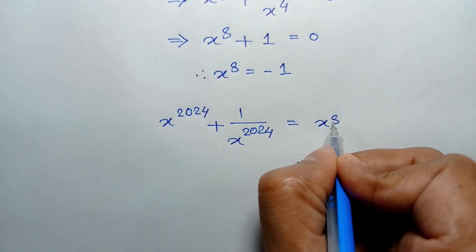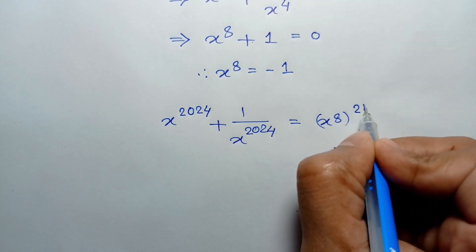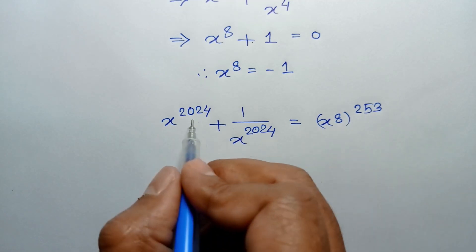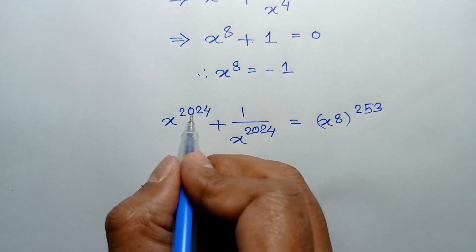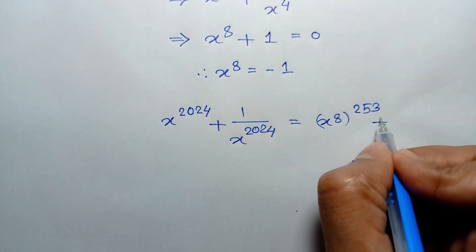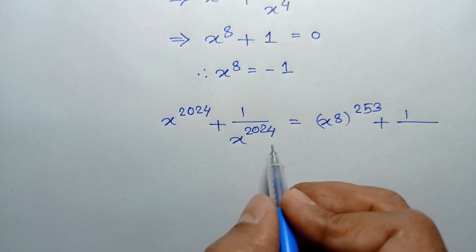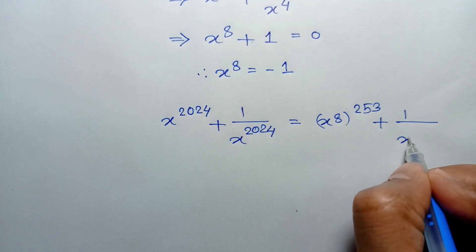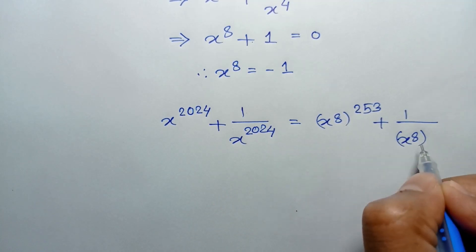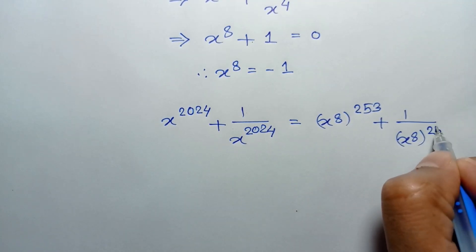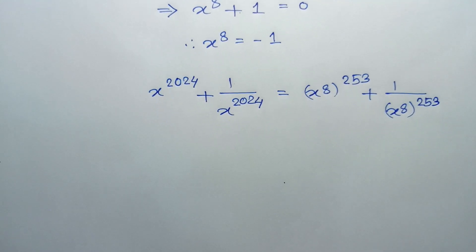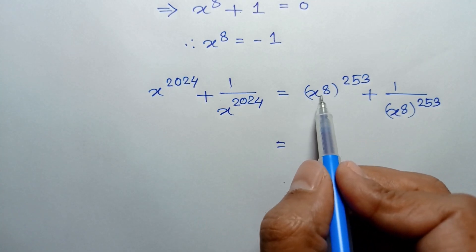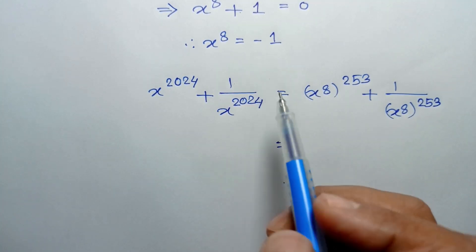So, x to the power 2024 can be written as x to the power 8, whole to the power 253, since 8 times 253 is 2024. Similarly, x to the power 2024 equals x to the power 8 whole to the power 253. Substituting the value of x to the power 8 equal to negative 1: